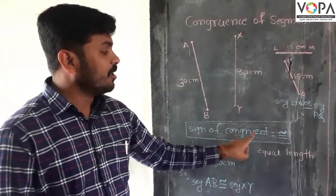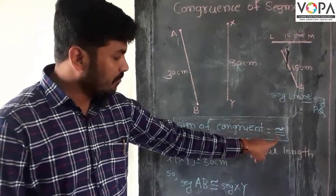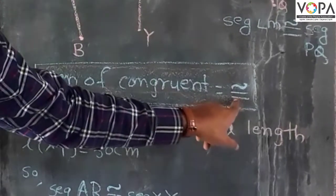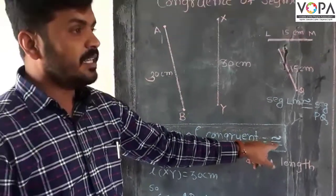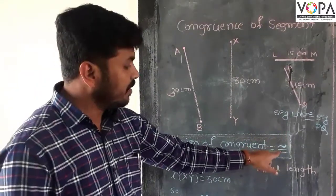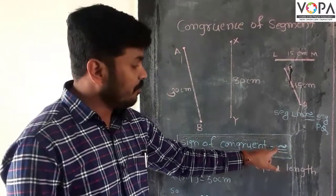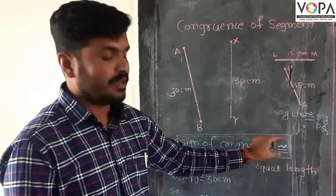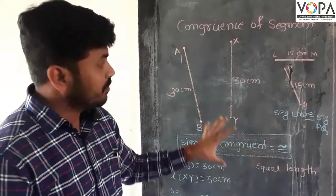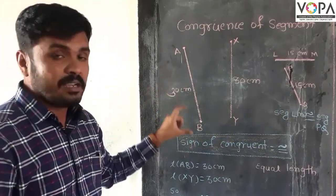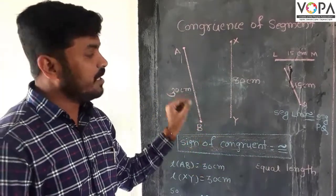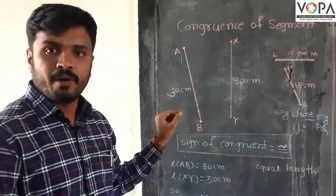And here is the sign of congruent. If you see carefully, there is the sign of equal to with a tilde on the upper side. This is the sign of congruence. The segments which have equal lengths are congruent.